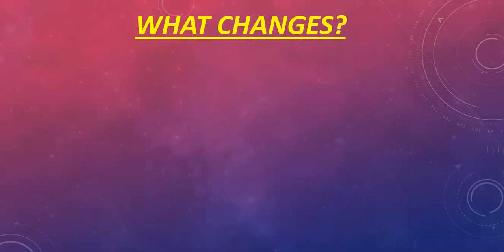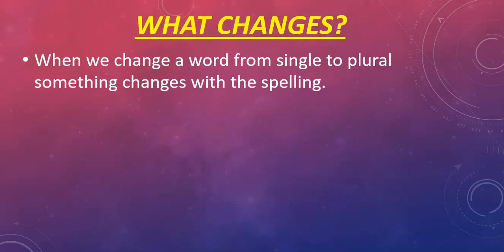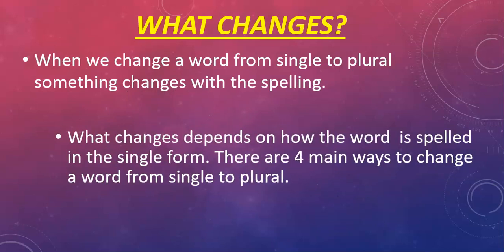But what changes between single and plural? Obviously the number of things has changed but something happens to the spelling as well. When we change a word from single to plural something changes with the spelling of the word. What changes exactly depends on how the word is spelled in the single form. There are four main ways to change a word from single to plural.